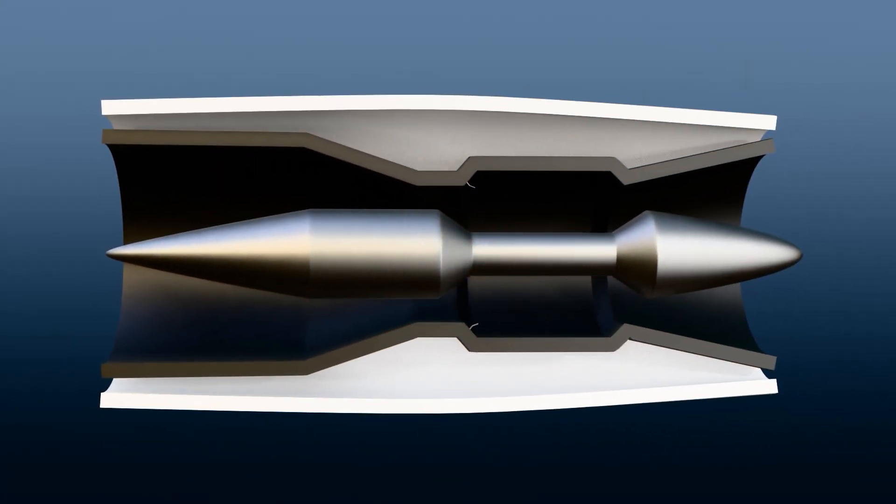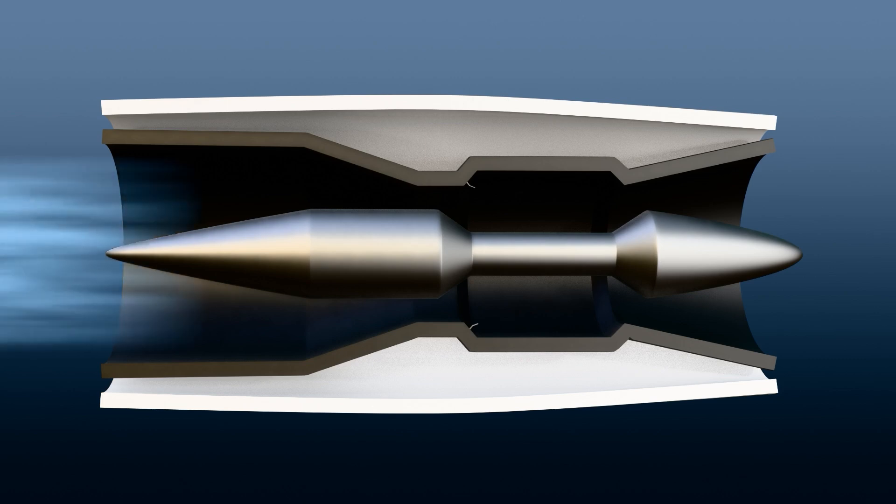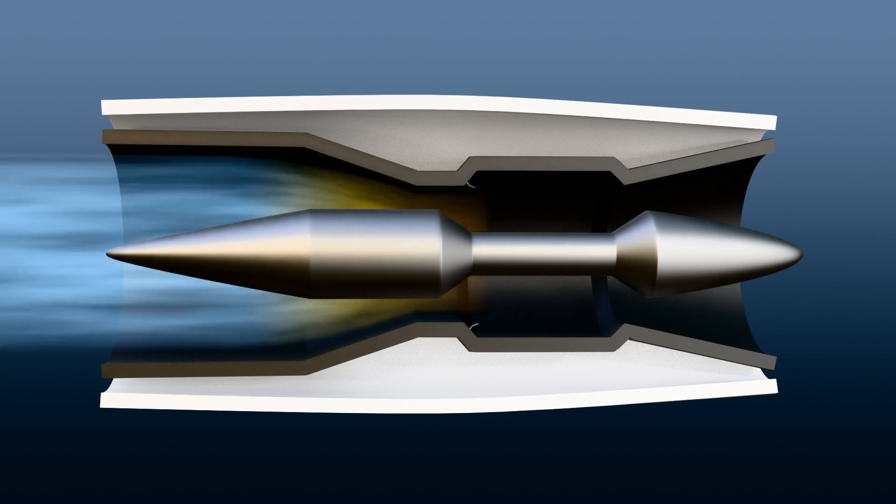A ramjet is a special type of jet engine that has no moving parts. It compresses air without using a rotating compressor. Unlike typical jet engines, which use spinning blades to compress air, a ramjet depends on the speed of the aircraft to compress air. This engine only works when the aircraft is already flying at supersonic speeds. At high speeds, air rushes into the engine and is compressed by the engine's narrow shape. This method of compression makes ramjets different from other jet engines that use compressors.